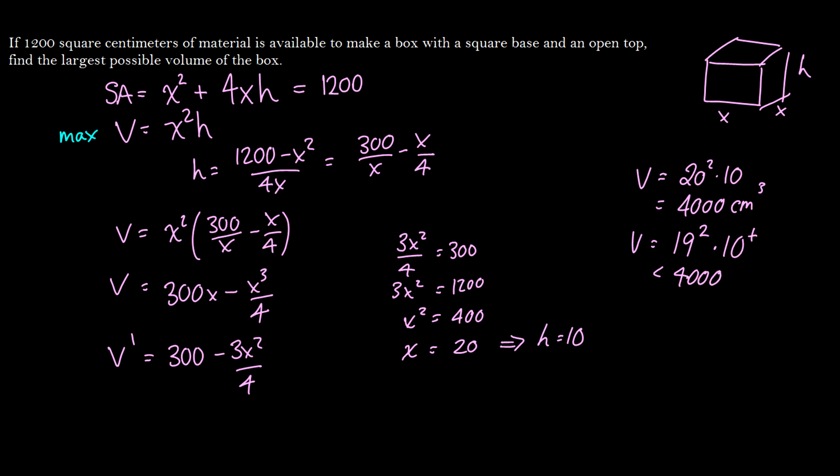So if we pick an x less than 20, it'll be less than 4,000. And if we pick an x that's greater than 20, we're still going to get an answer less than 4,000. So we know that to optimize this box, x is equal to 20, h is equal to 10 is going to give us our best bet.